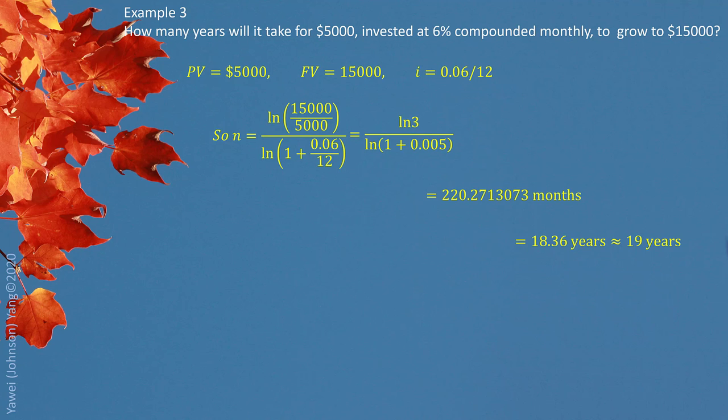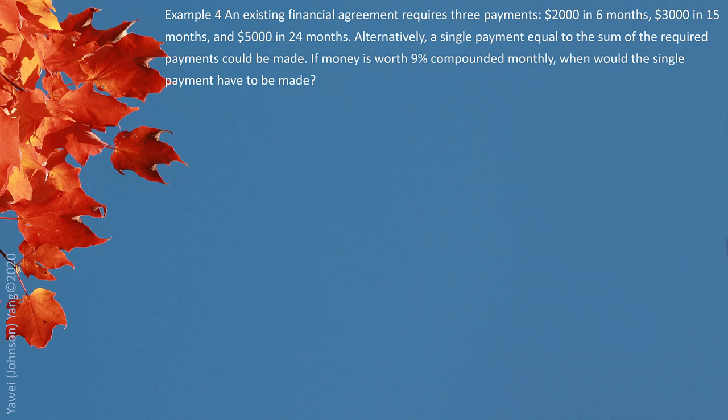Example 4. An existing financial agreement requires 3 payments: $2,000 in 6 months, $3,000 in 15 months, and $5,000 in 24 months. Alternatively, a single payment equal to the sum of the required payments could be made. If money is worth 9% compounded monthly, when would the single payment have to be made? By reading this question, that means these three payments, $2,000, $3,000, and $5,000 will be equivalent to the single payment. Single payment is the sum of this. So $2,000 plus $3,000 plus $5,000 would be $10,000.